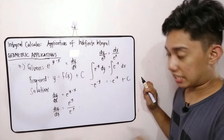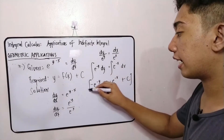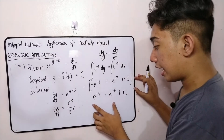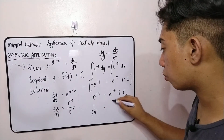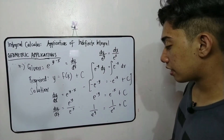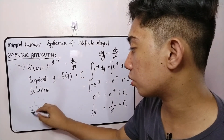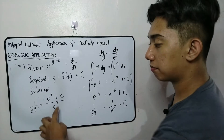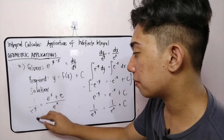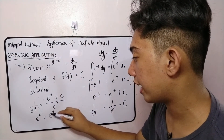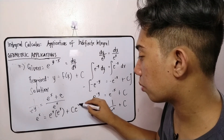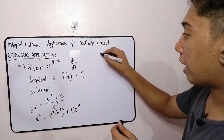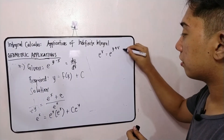Multiplying both sides by negative one: e^(−y) equals e^(−x) plus c, which gives 1 over e^y equals 1 over e^x plus c. Finding the LCD: 1 over e^y equals (e^x + c) over e^x. Cross-multiplying: e^x equals e^y times (e^x + c·e^y), which expands using exponent laws to e^x equals e^(y+x) plus c·e^y.